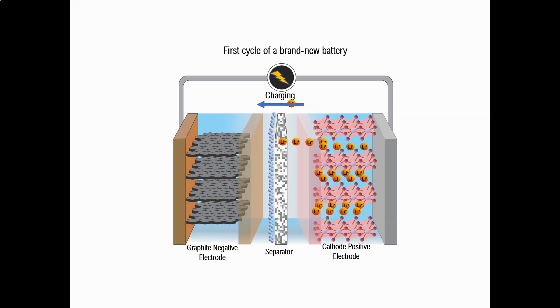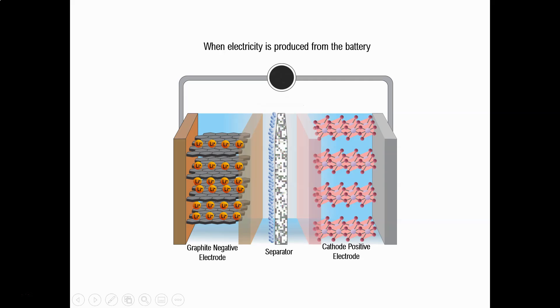Now let's look at what happens during the first charge. Lithium ions move from the cathode to the anode, and when the battery is fully charged the lithium ions move from the anode back to the cathode generating electricity.